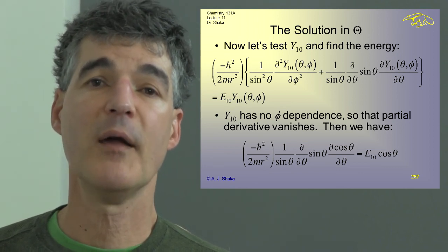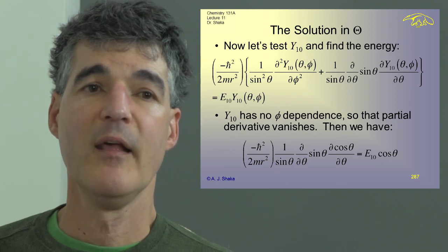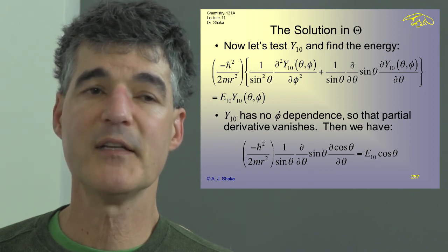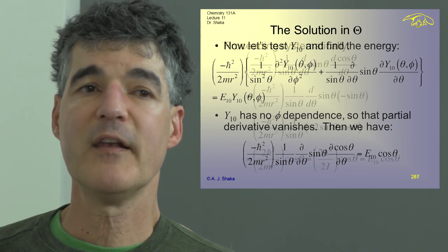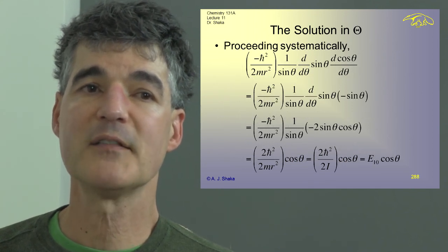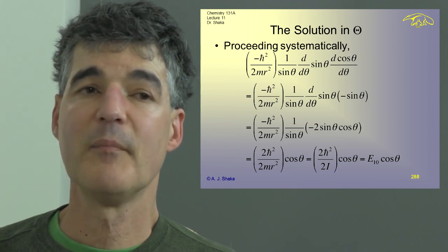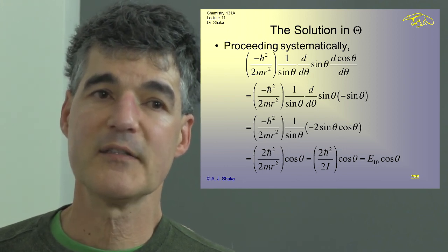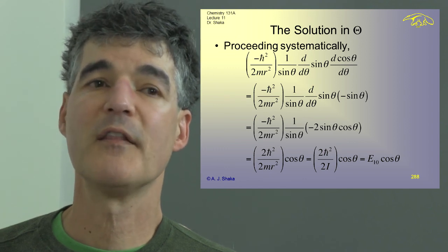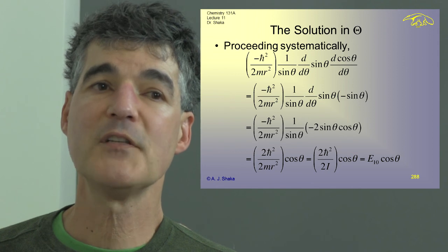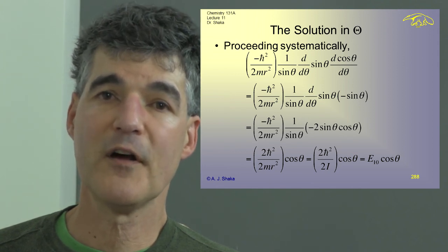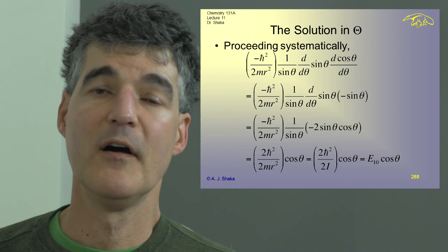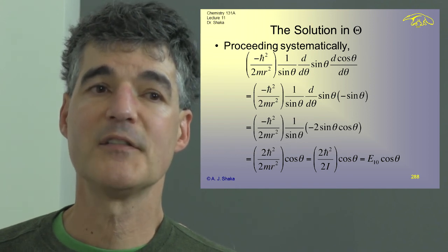The derivative of cosine theta with respect to theta is minus sine theta. Then taking the derivative of minus sine squared theta using the chain rule gives minus 2 sine theta cosine theta. Magically, the 1 over sine theta out in front cancels the sine theta obtained by taking the derivative of sine squared theta, and I just end up with cosine theta. The minus sign cancels the minus sign on h-bar squared.